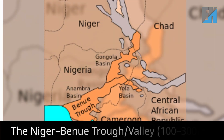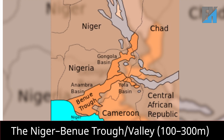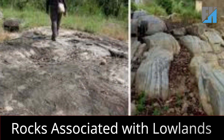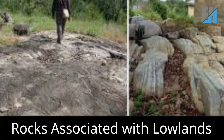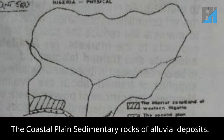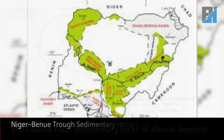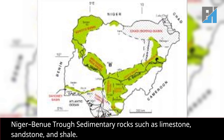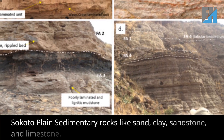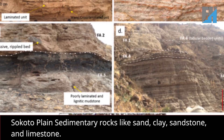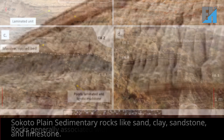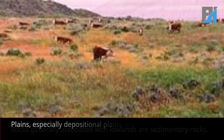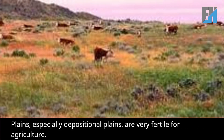Other lowland areas include the Niger-Benue Trough Valley, 100–300 meters, and the Niger Delta, 0–100 meters. Rocks associated with lowlands: the coastal plain has sedimentary rocks of alluvial deposits; the Niger-Benue Trough has sedimentary rocks such as limestone, sandstone, and shale; the Sokoto Plains have sedimentary rocks like sand, clay, sandstone, and limestone.